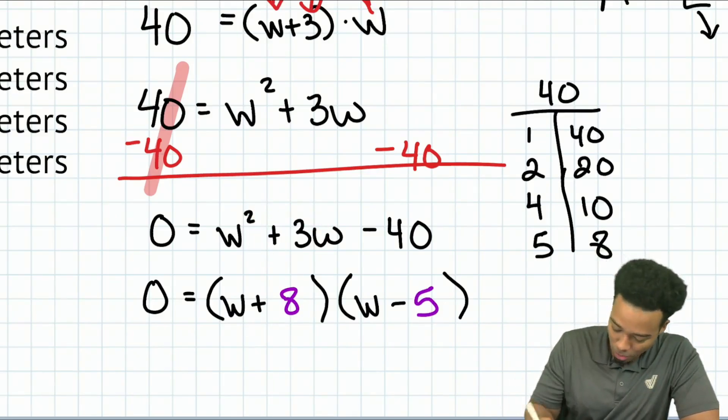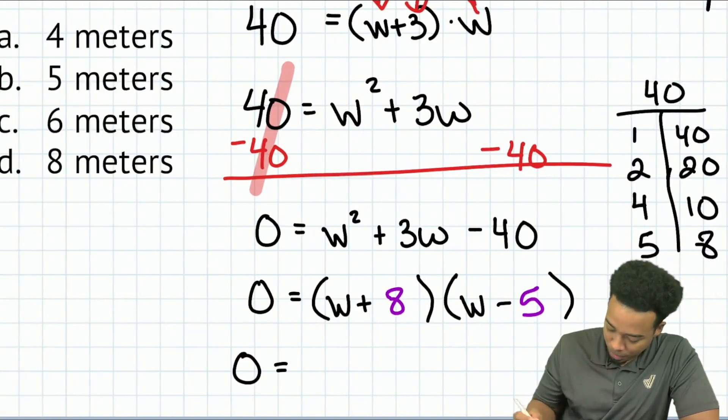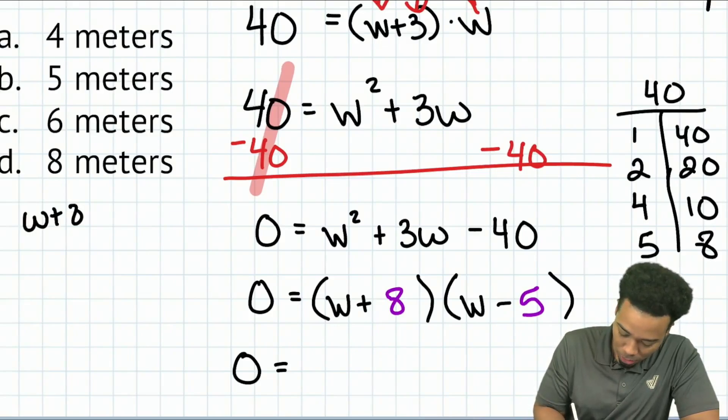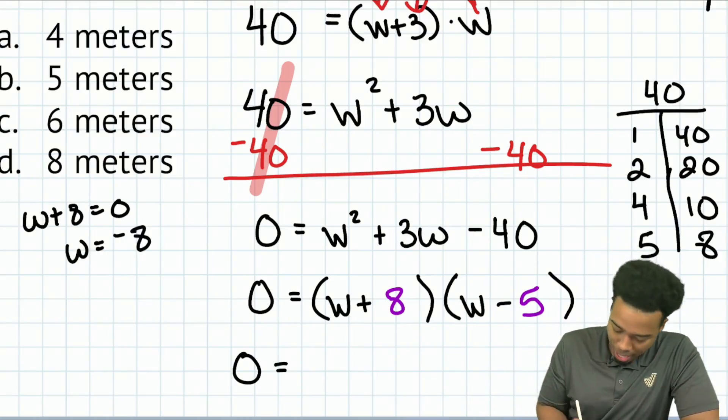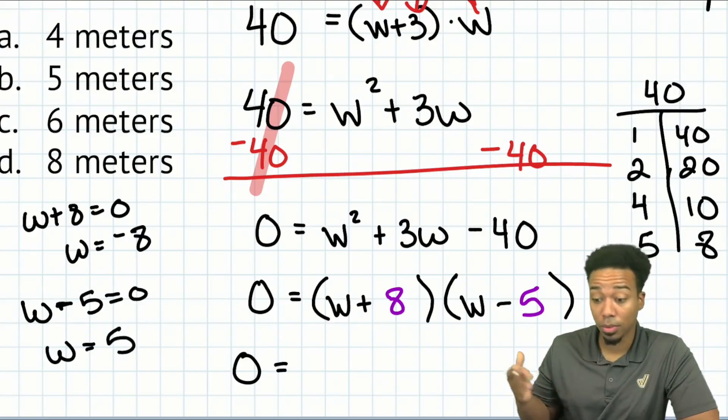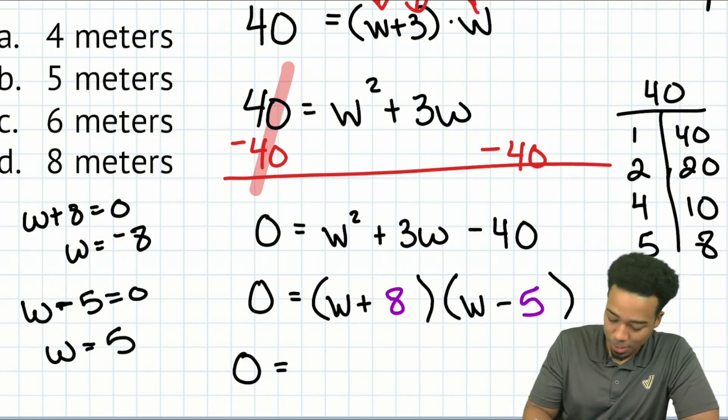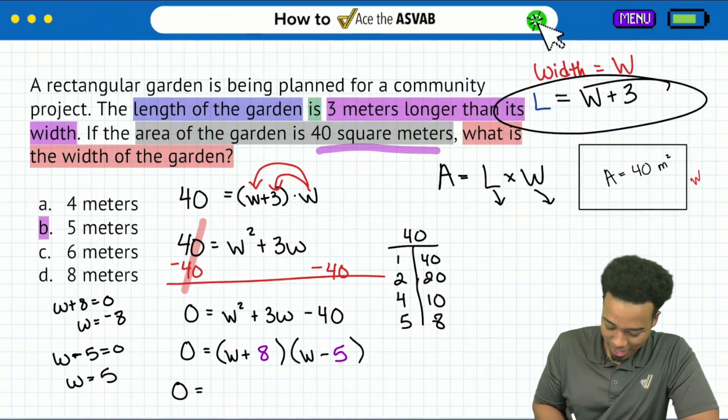Now that we're here, we're setting up party people. We solve this and we will go ahead and see that, hey, W plus eight being equal to zero means that W can be negative eight, which doesn't make sense because we can't have a negative width. And then we have W minus five equals zero. Add five to both sides and we get W equals five. We can absolutely have a positive width. And that's why B is the correct answer.